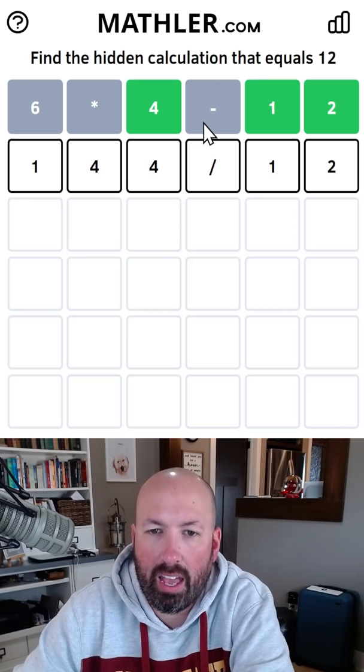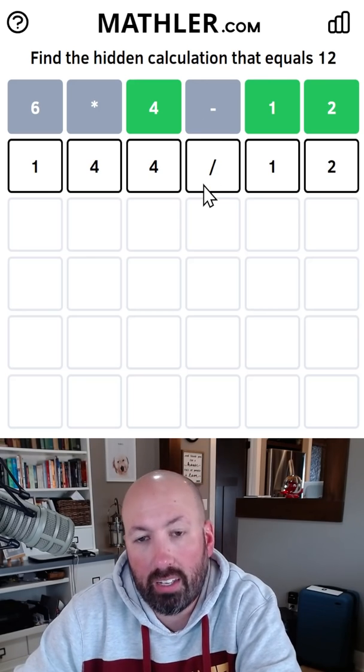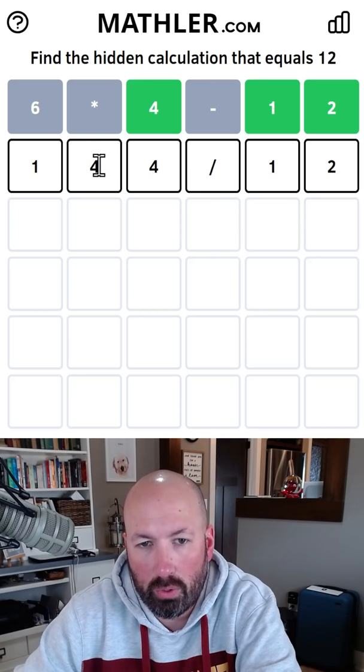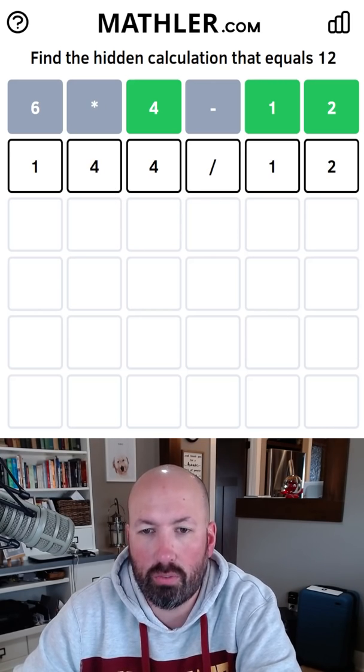So if we're not adding 12, we have to be dividing by 12, and if we're dividing by 12, we've got to be at 144. I think it has to be 144 divided by 12.